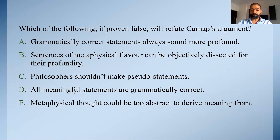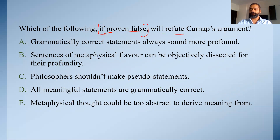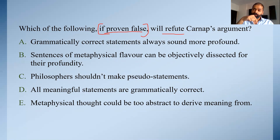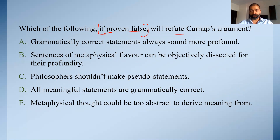Be careful about questions like these. Although they're not difficult, they sound difficult because they're multi-layered. Break it down — which of the following, if proven false, will refute Carnap's argument? Refute means saying Carnap's argument is wrong. So if the statement is proven false, then it will refute his argument. It's just another way of asking which of the following is an assumption in the argument. The fundamental meaning of 'assumption' in critical reasoning is: the statement which has to be true for the whole argument to be true. If that statement is proven false, the argument falls apart.